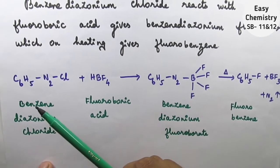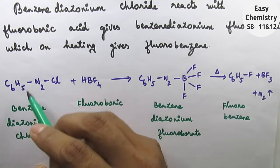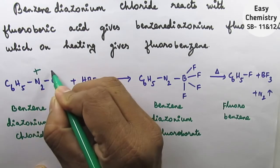Look at this, this is a benzene diazonium chloride C6H5-N2-Cl, write down the charge as N2 plus, Cl minus.